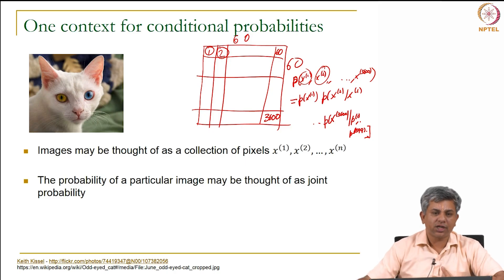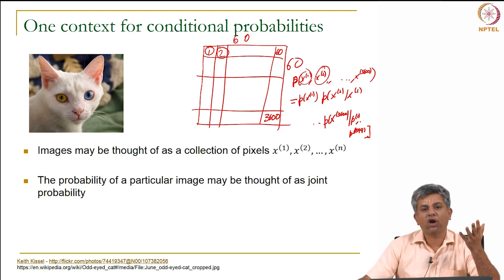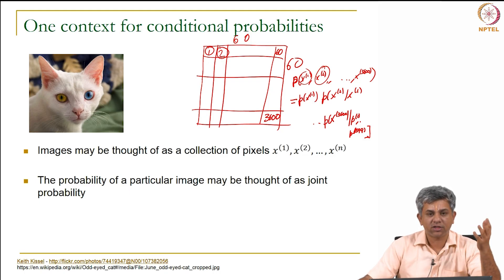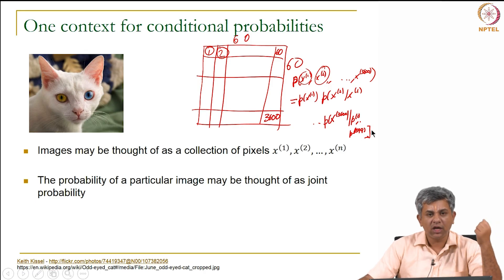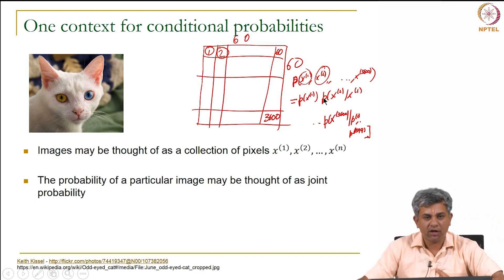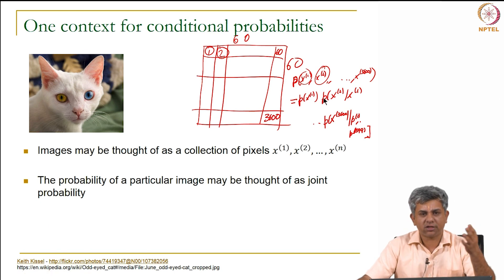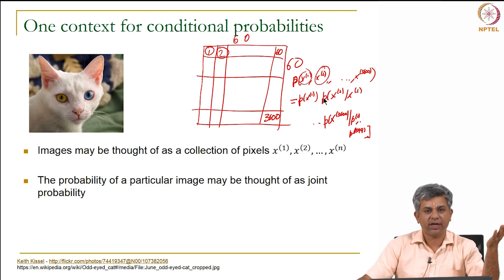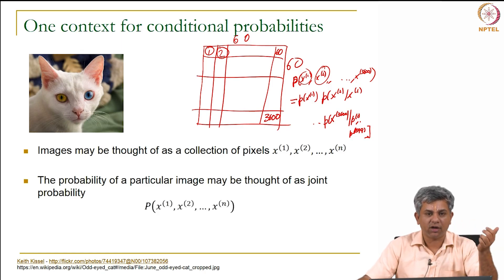In addition to this, if we use conditional independence assumptions through machine learning models, this whole expression can be simplified tremendously. This is one context — not the only one — where conditional probabilities and the chain rule can be used very conveniently.